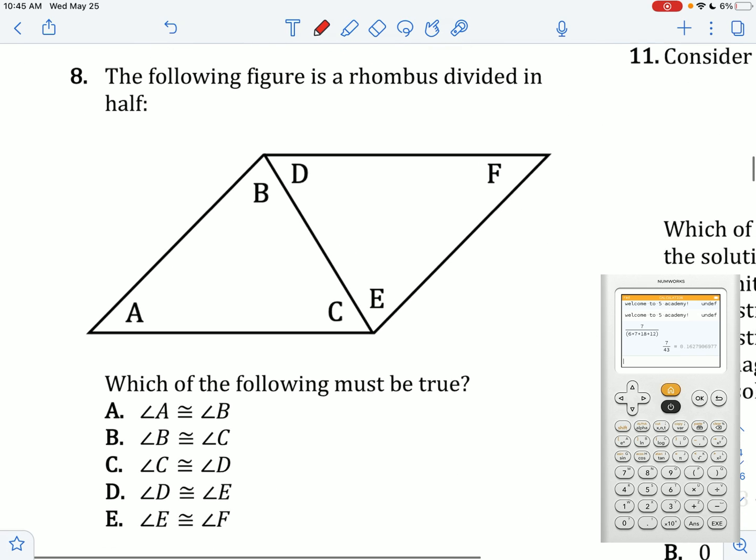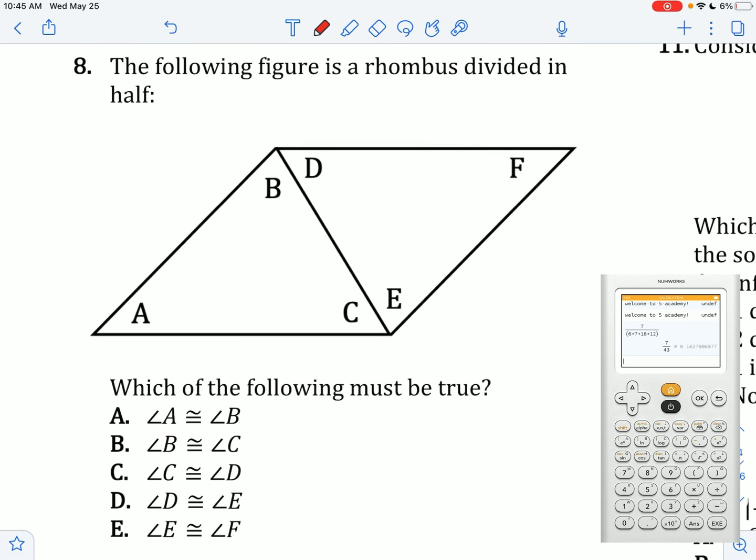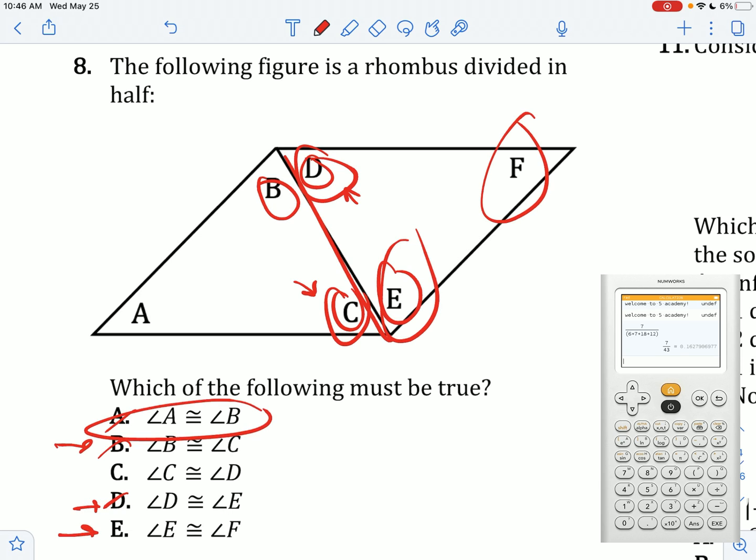The following figure is a rhombus divided in half. Which of the following must be true? Is angle A going to equal angle B? Not necessarily. You can have A be a much smaller angle than B. Is B equal to C? These look close, but that's only going to be equal if these two sides are the same length, and they definitely do not have to be. Is C equal to D? This is definitely going to be true because of alternate interior angles. D and E would be the same as B and C, which is wrong. E and F is the same as A and B. So C is the only unique option.